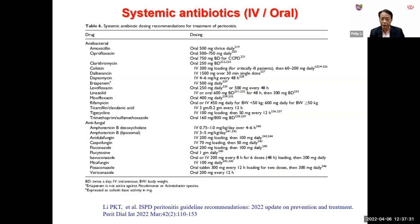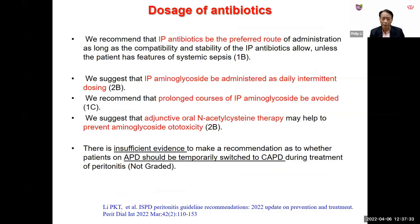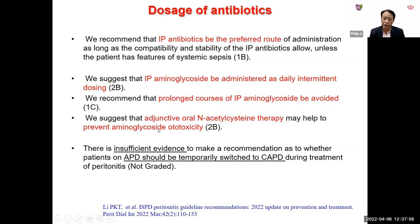A dosing table in the guidelines lists all antibiotic doses for intraperitoneal, intravenous, and oral administration. IP antibiotics remain the preferred route. When IP aminoglycosides are used, daily intermittent dosing is recommended to reduce toxicity; prolonged courses of IP aminoglycosides should be avoided — this is a 1C recommendation.